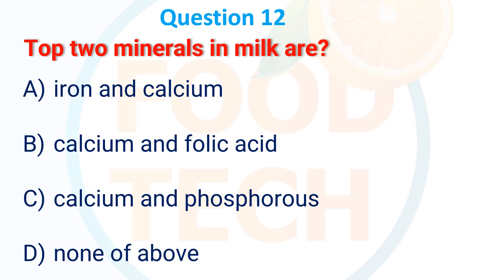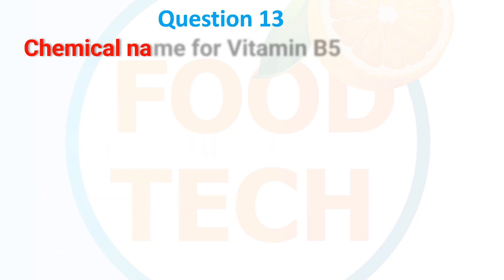Question 12: Top two minerals in milk are — A. Iron and calcium, B. Calcium and folic acid, C. Calcium and phosphorus, D. None of the above. The answer is C. Calcium and phosphorus.